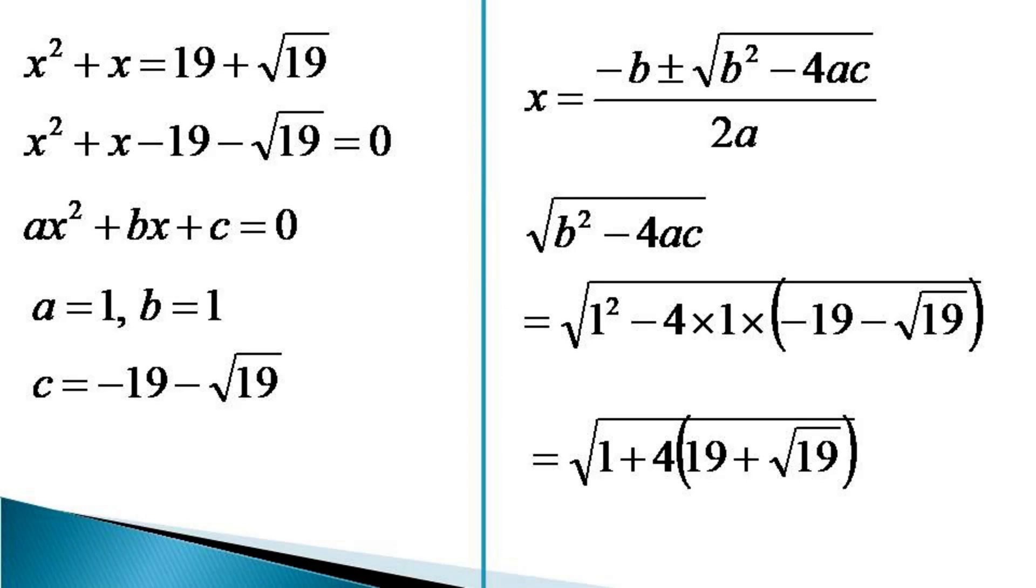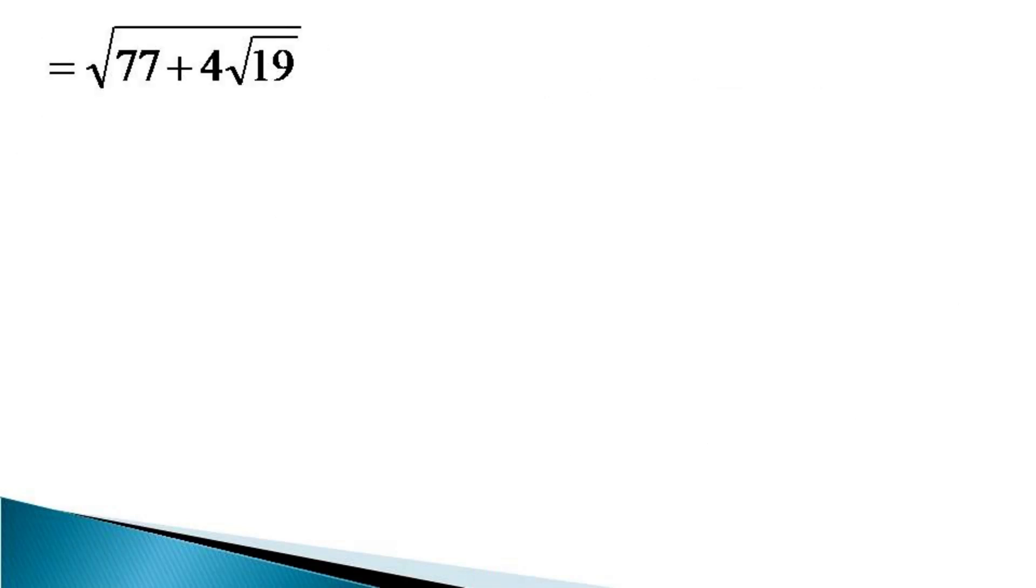The minus signs cancel each other and this can be written as equal to √(77 + 4√19). This is the radical expression and we have to take the square root of the radical expression under root. So to do this, we express it as equal to √(77 + 2 × 2√19).